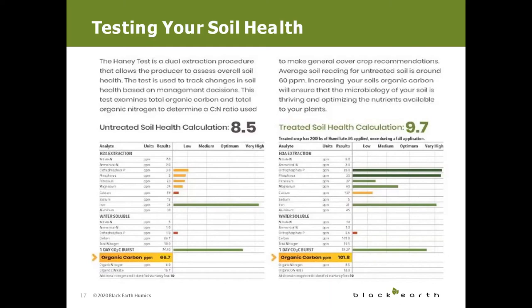The Haney test examines total organic carbon and total organic nitrogen to determine a carbon-to-nitrogen ratio. Soil microbes breathe in oxygen and release carbon dioxide the way humans do, and higher CO2 levels indicate more microbial activity.